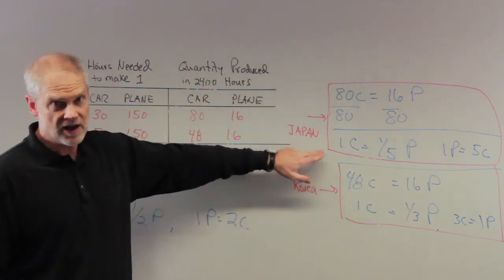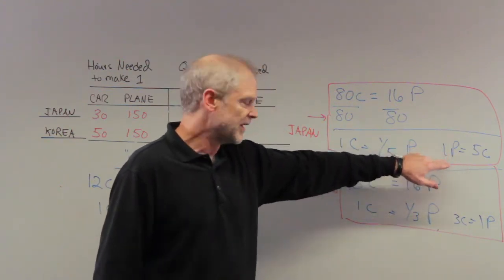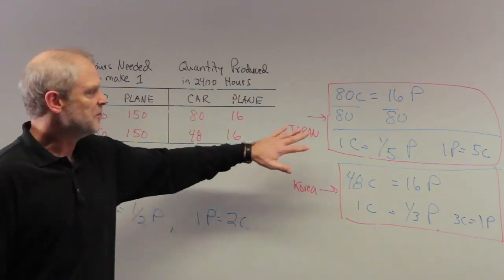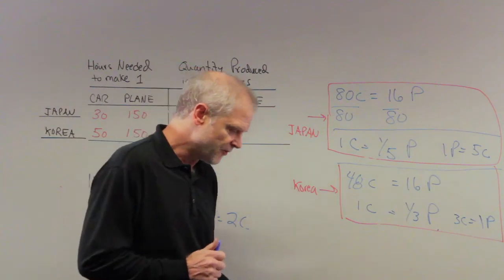Alternatively, Japan loved this, as we said, because one plane, they had to use five cars to get one plane. Now they only have to use two cars to get one plane. Japan loves this trading price and would want to trade as much as it could. So, what does that leave you for an answer?